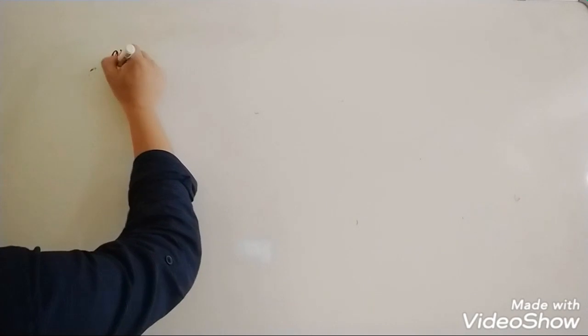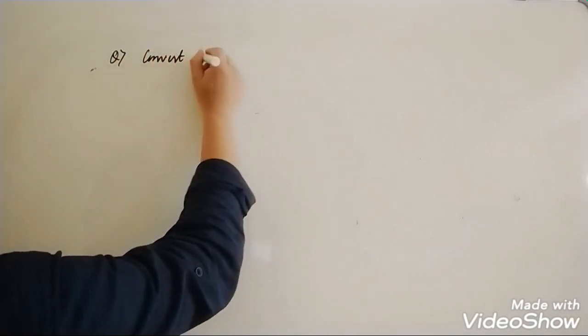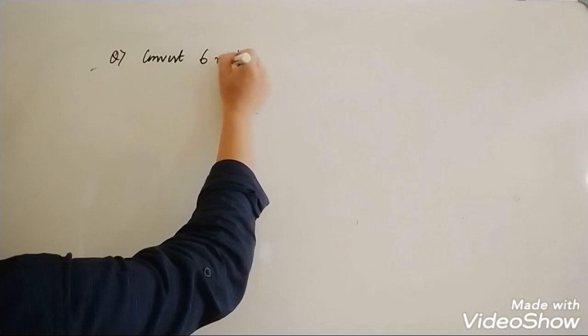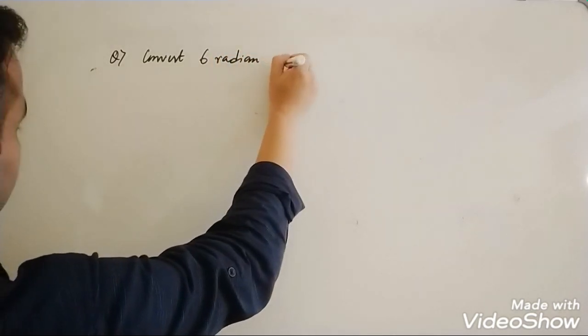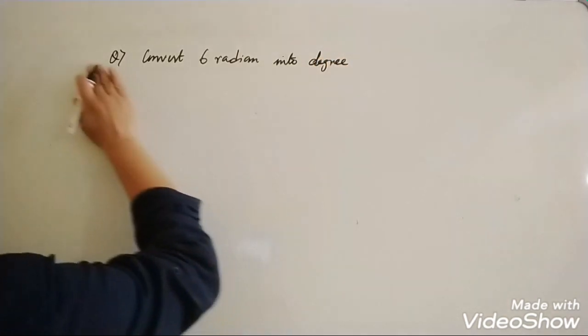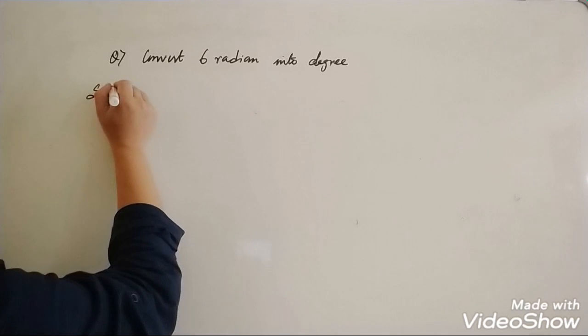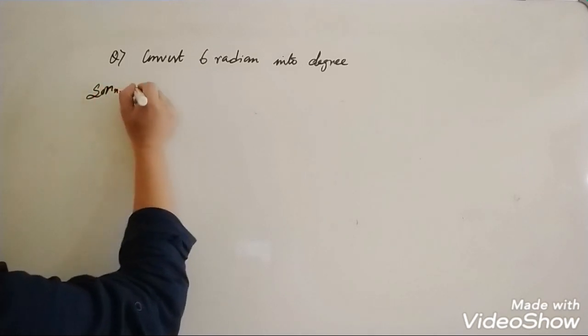Hello everyone, today we will continue the previous lesson that is Radian and Degree Measure. The question is: convert 6 radians into degrees. In the solution, first we have to write the formula.